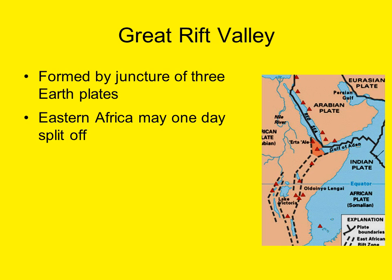The Great Rift Valley is an area of intense volcanic activity that stretches from Syria all the way down to Mozambique and southern Africa. Three major tectonic plates collide in this region, and the current trend is that the eastern edge of Africa is going to split off from the rest of the continent — it is moving in different directions than the rest of Africa, as shown by the directional arrows on the map.